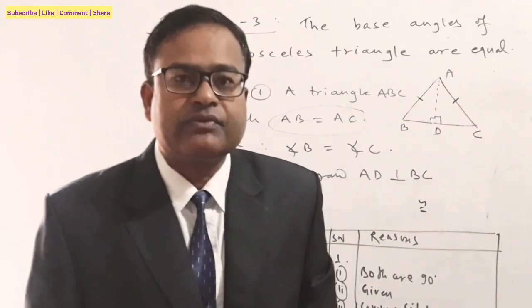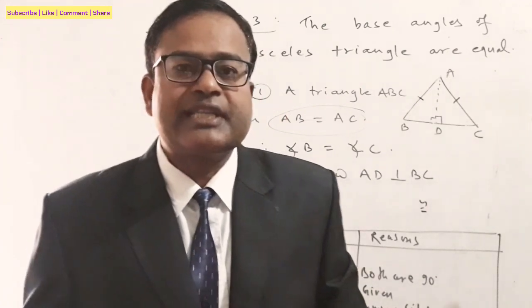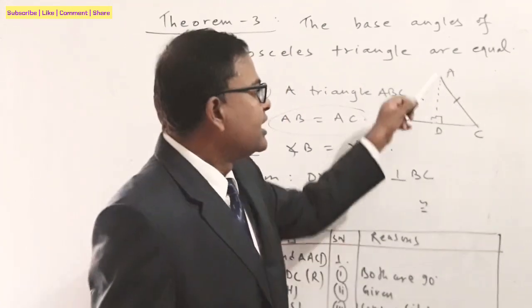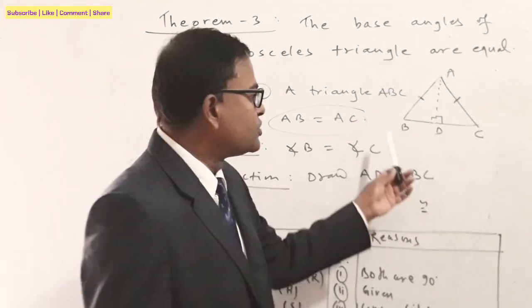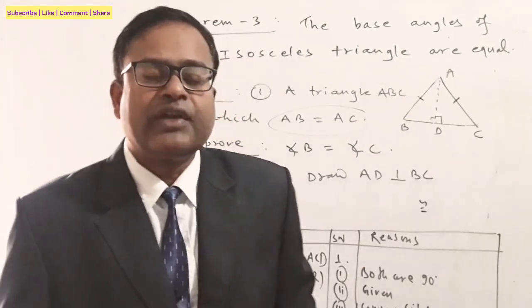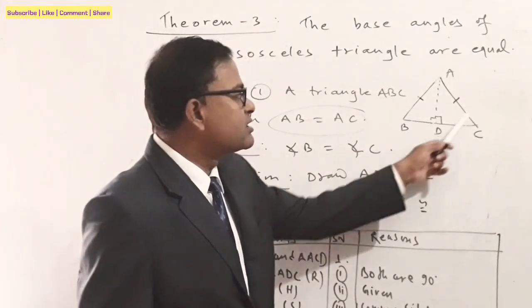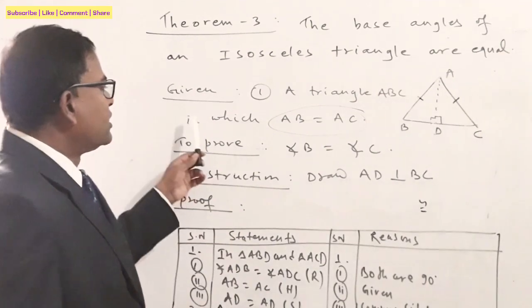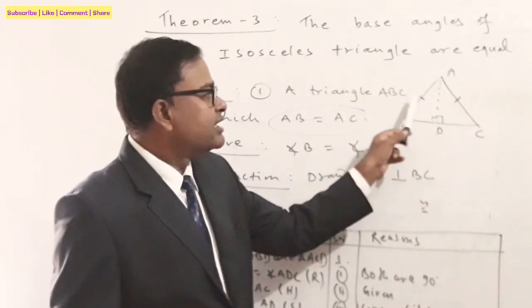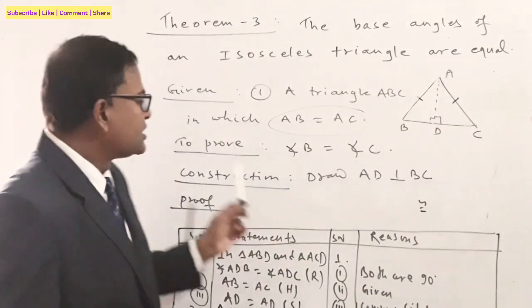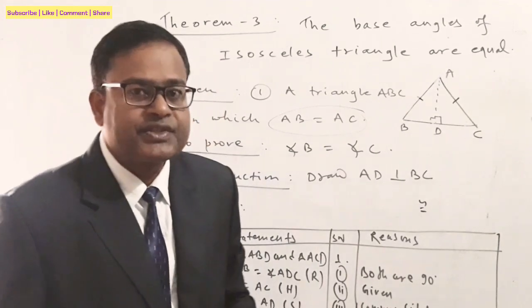When two sides are equal, the third side is known as the base. So in triangle ABC, the two sides AB and AC are equal, and the third side BC is the base. We have to prove that angle B is equal to angle C — that means the base angles of an isosceles triangle are equal.